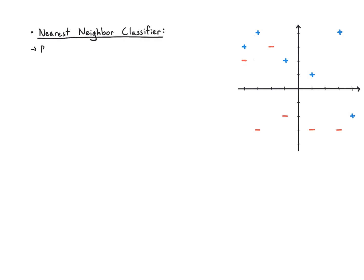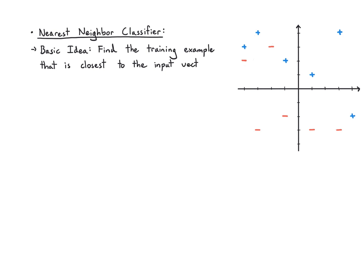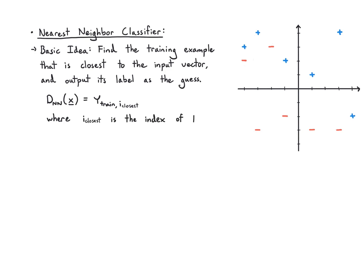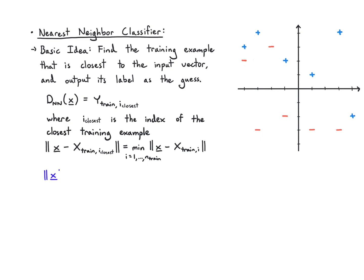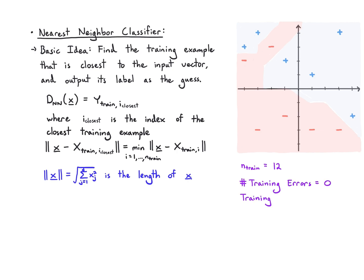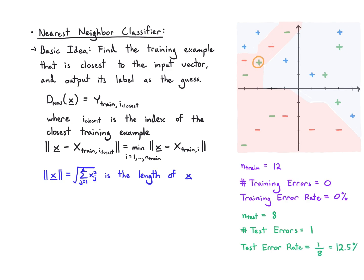Here is the nearest neighbor classifier — our first classifier. The idea is to take your training data and form a dictionary. Every time you're given an input vector, you look through that dictionary to find which training example is closest and output its label. The decision is the label of the closest point — the index i* that minimizes the distance across the entire training set. In this example I have 12 training points, zero training errors, and only one test point misclassified, giving a test error rate of 1/8 = 12.5%.